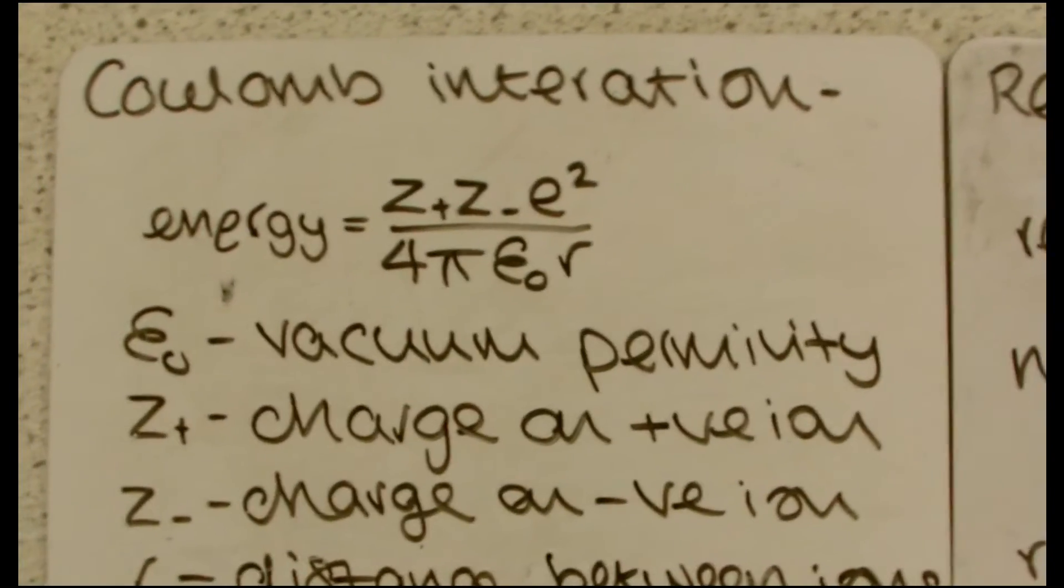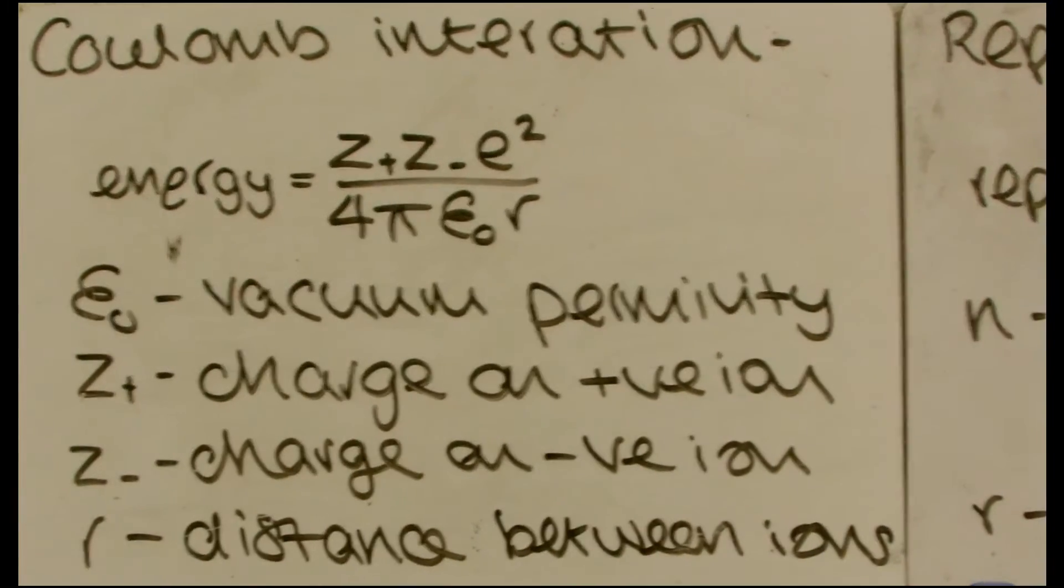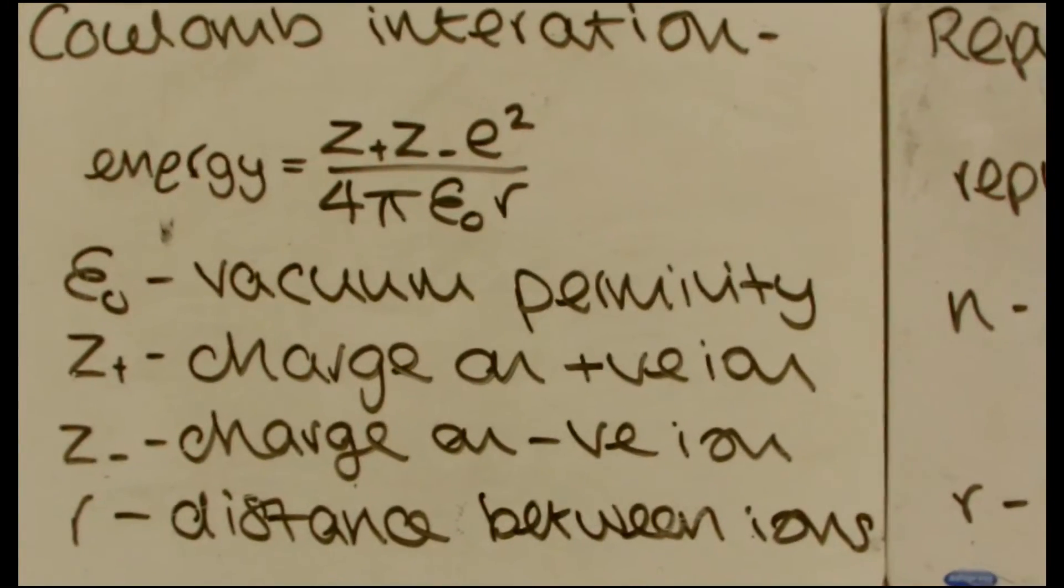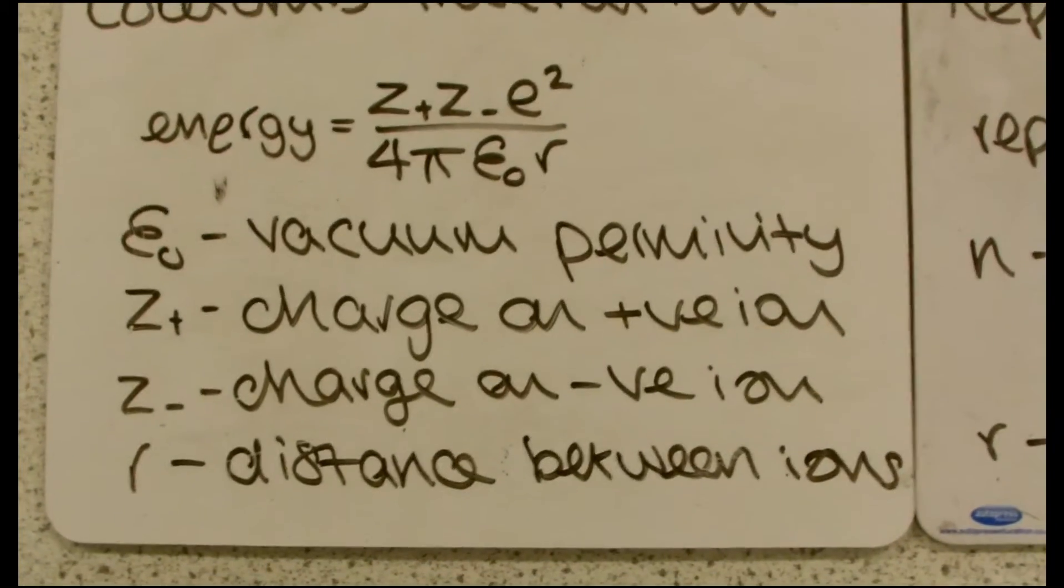So what we have here is talking about ions and how they interact. We've got the standard interaction, which is the Coulomb interaction, which is between two charged particles, shown here as Z plus and Z minus.